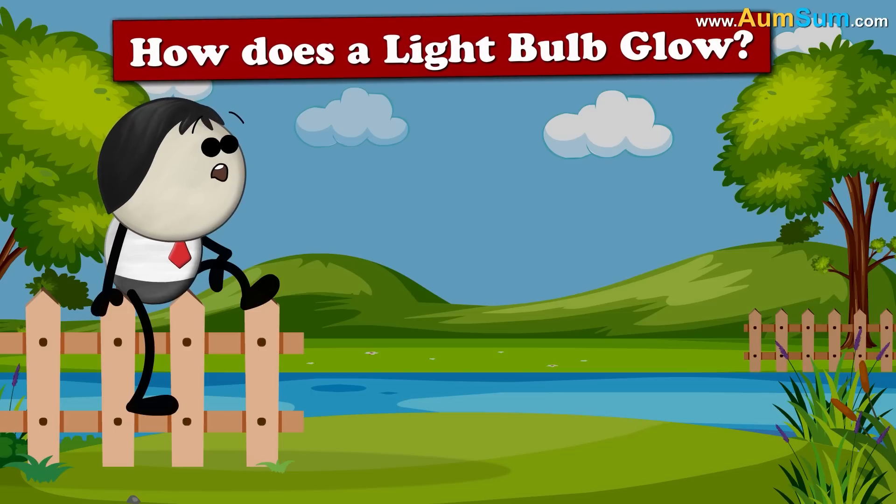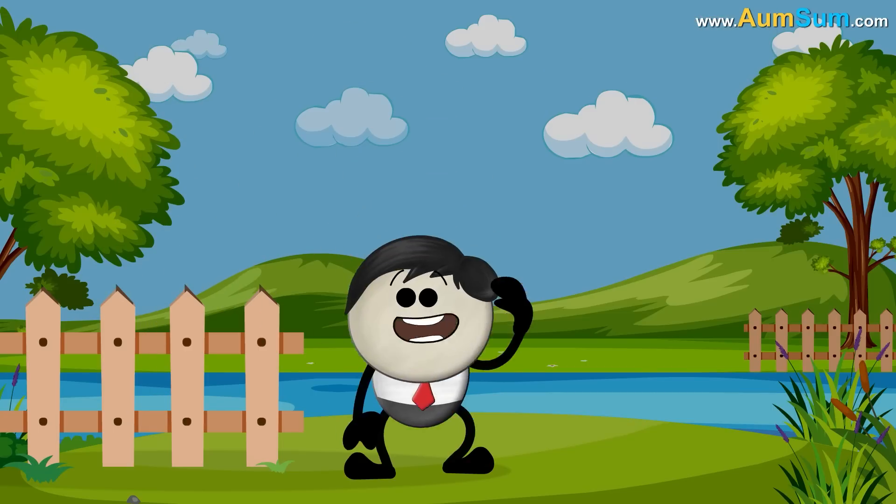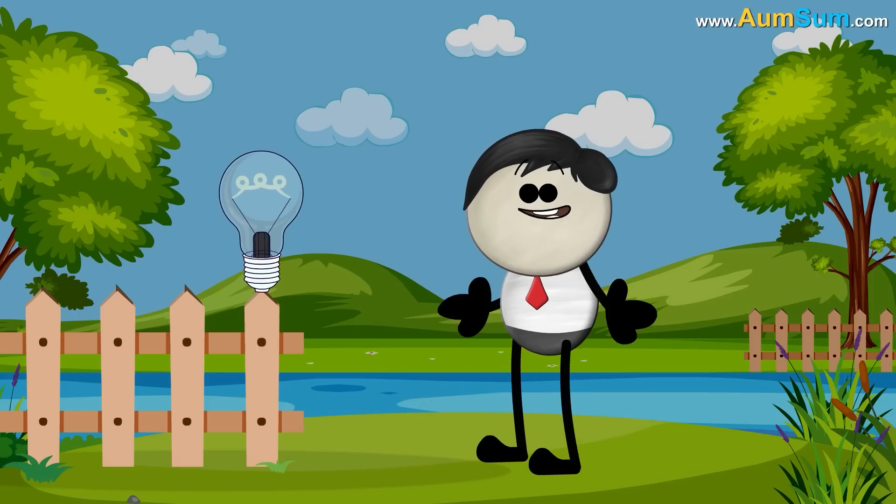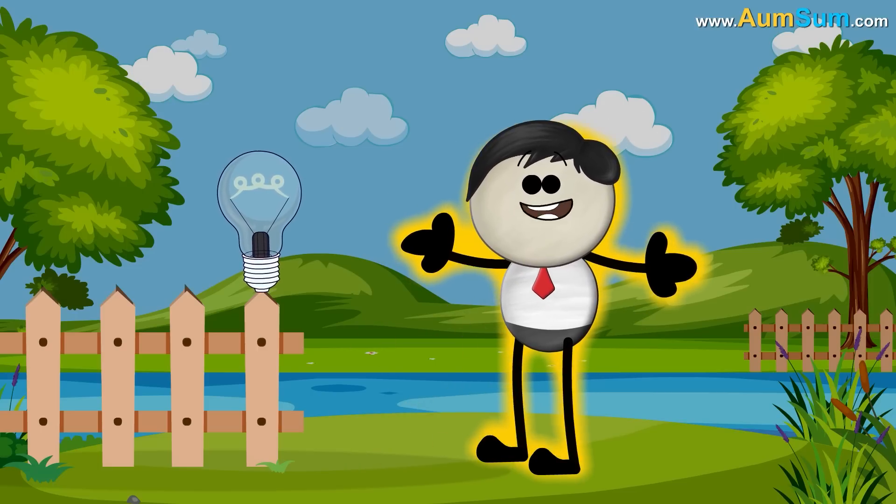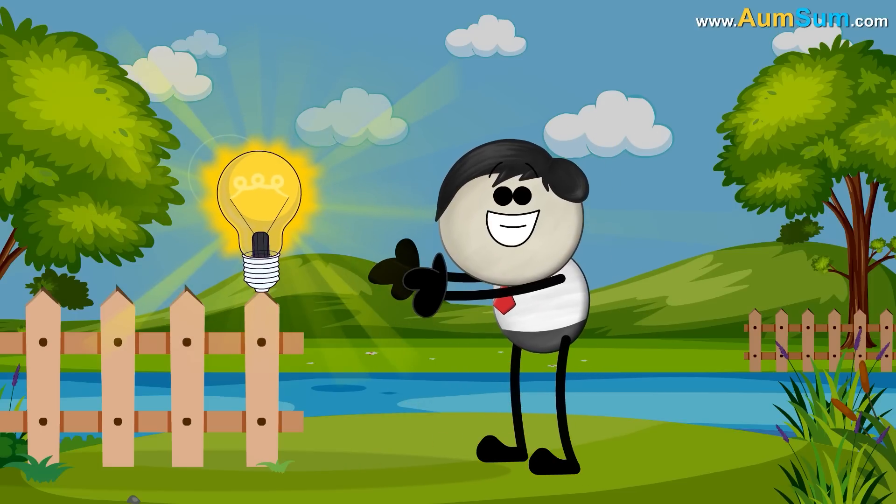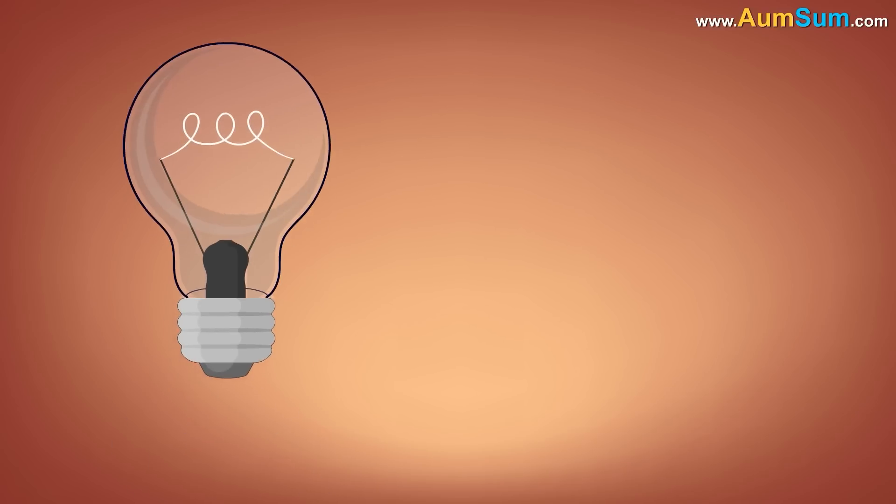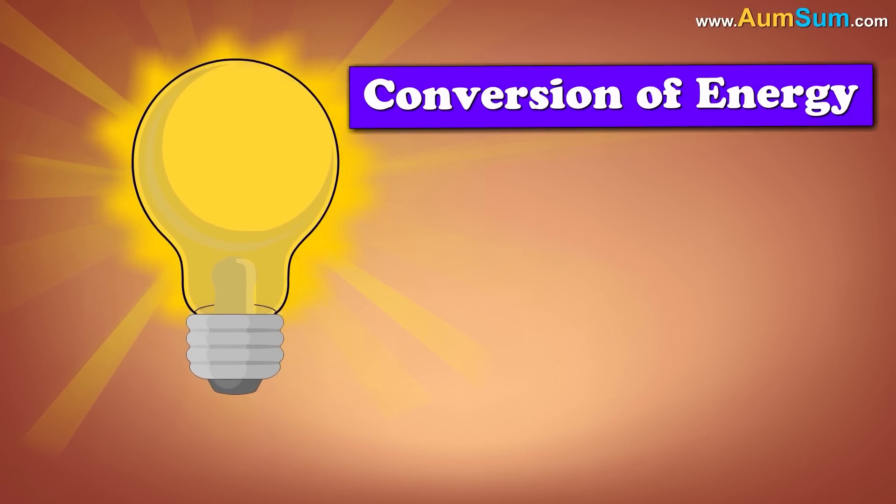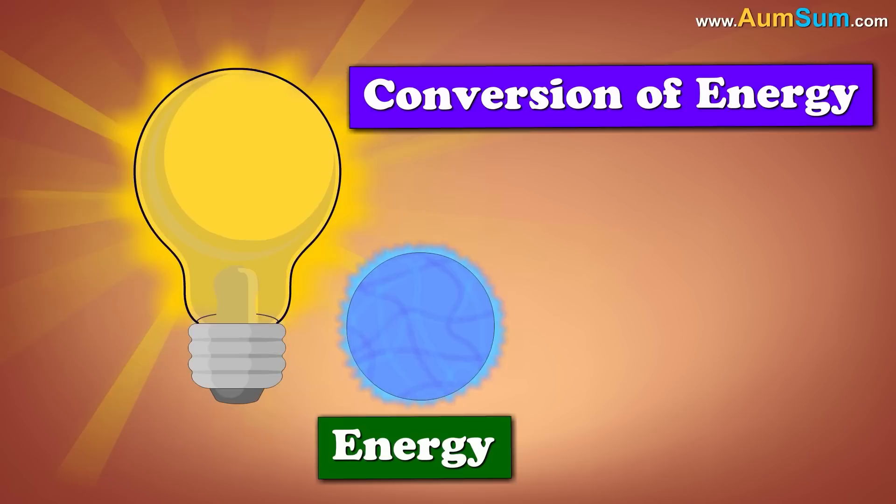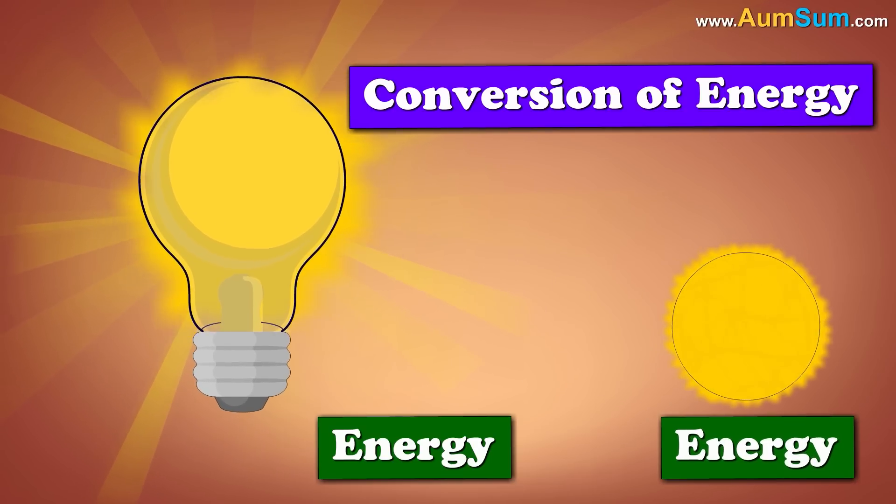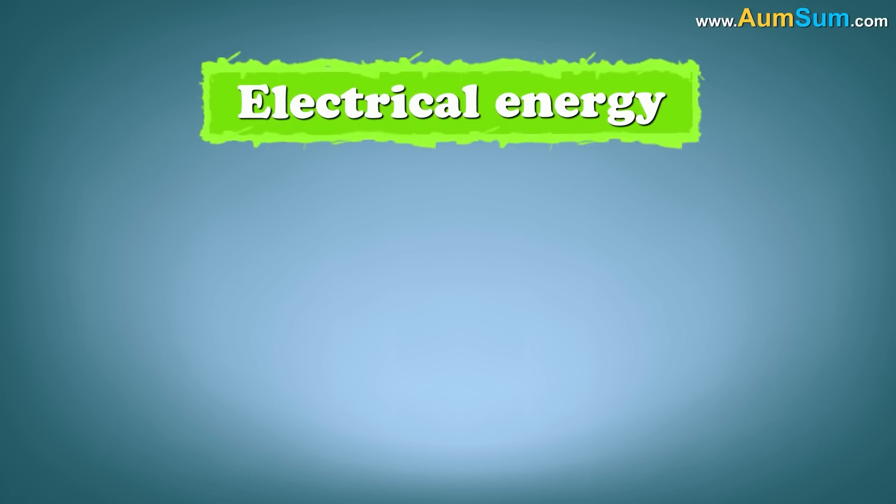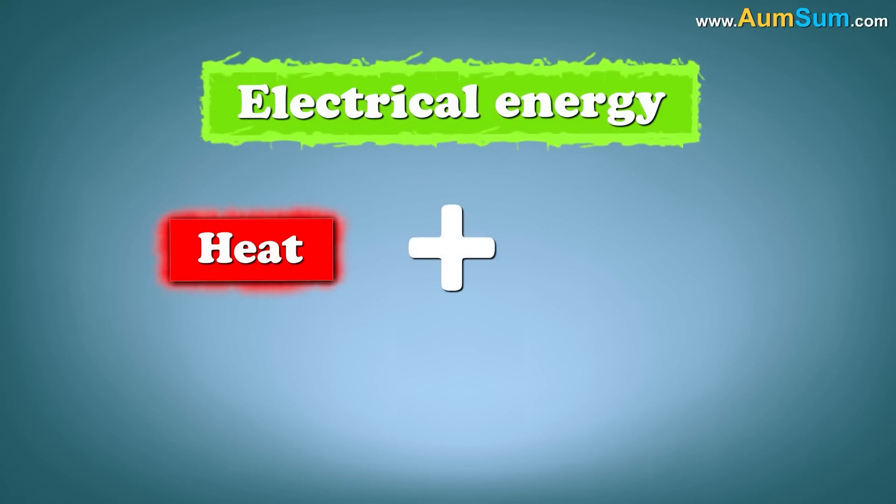How does a light bulb glow? Simple. It glows because of AumSum's brightness. Oh AumSum. A light bulb glows because of the principle of conversion of energy, which states that energy is converted from one form to another. In this case, electrical energy is converted to heat plus light.